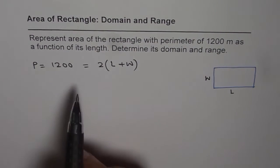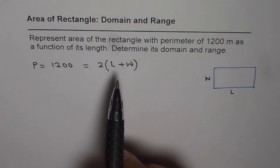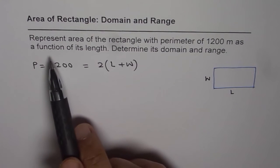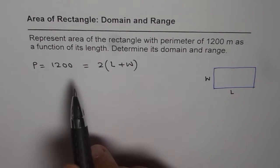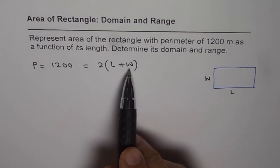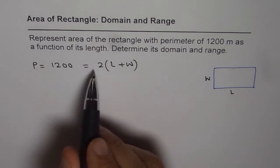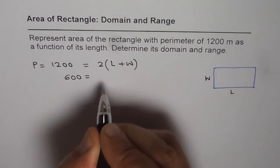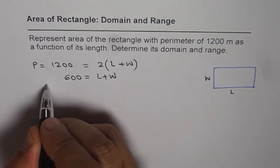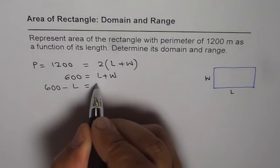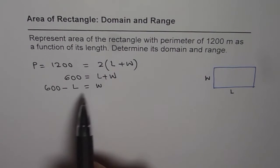So that equation can help us find relation between length and width. Now since we want to represent our function area in terms of length, we will write what width is in terms of length. So solving this equation, let's divide by 2 on both sides. So we get 600 equals to length plus width or we can say 600 minus length is width. So that is a relation of width with respect to length.